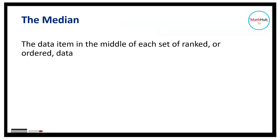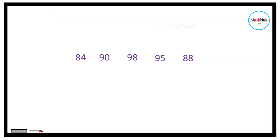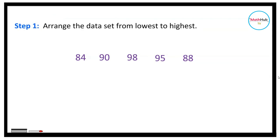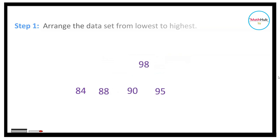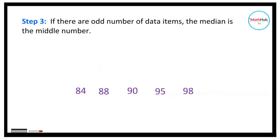Now let's define the median. The median is the data item in the middle of a ranked or ordered data set. For example, find the median for the following group of data. The first step is to arrange the data items in order from smallest to largest: 84, 88, 90, 95, and 98. We have 5 items, which is odd. When the number of data items is odd, the median is the middle number. In this case, the middle number is 90, so the median is 90.